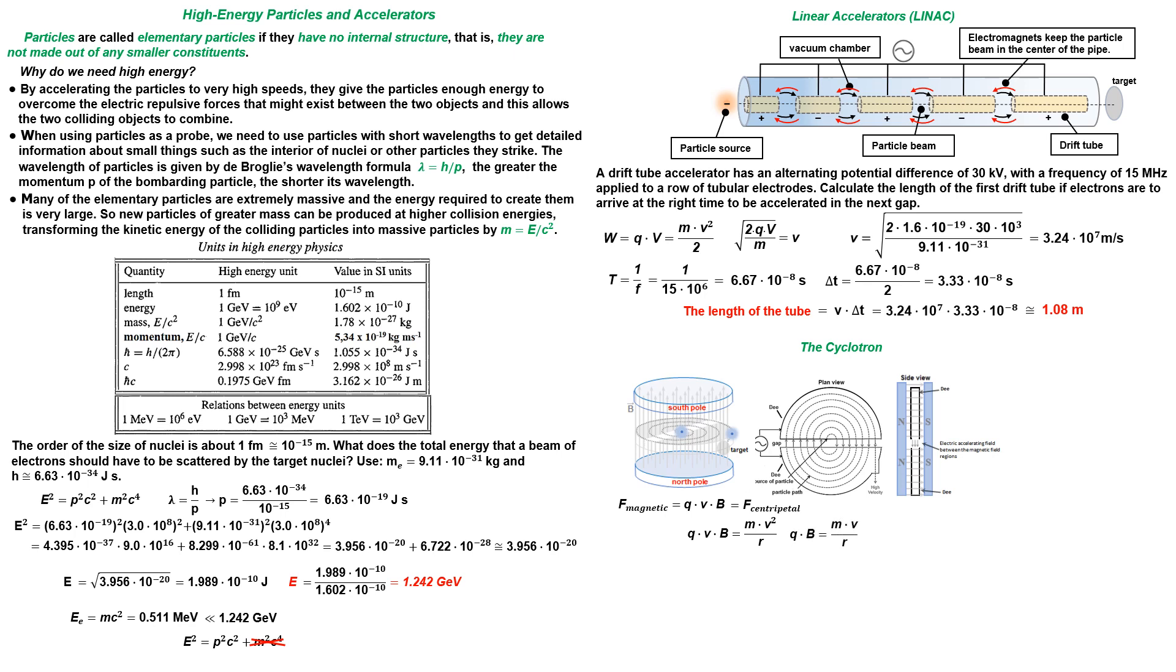A particle is injected into the first dee sector near the center of the cyclotron and it moves in a circular path. According to the equations we just derived, the time taken for this particle to move through this dee is the same time taken by the particle in describing a semicircle.